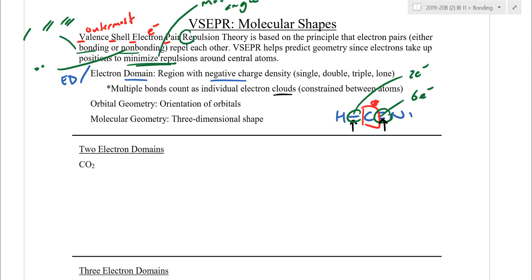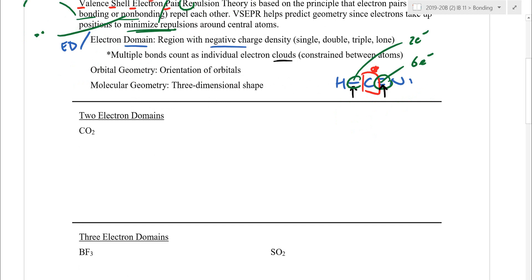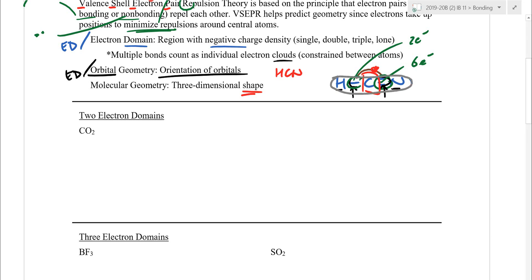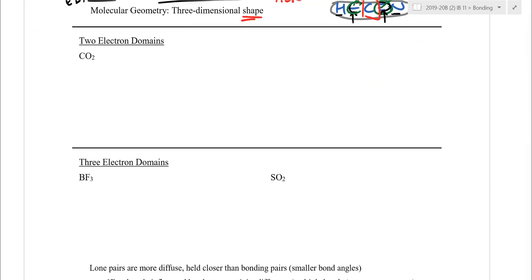There are two different types of geometry we'll look at. The electron domain geometry (or orbital geometry) looks at where the orbitals are without worrying about the attachments — just counting domains and figuring out the bond angles. The molecular geometry is the actual shape of the molecule: for HCN, it asks how the H relates to the C and to the N — are they straight across, at an L, or bent?